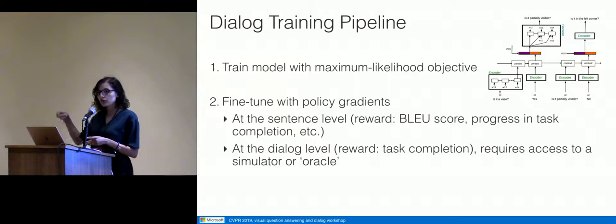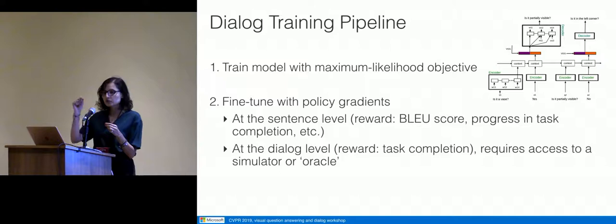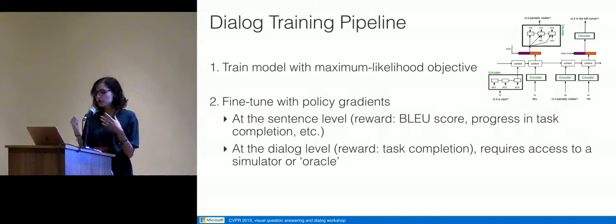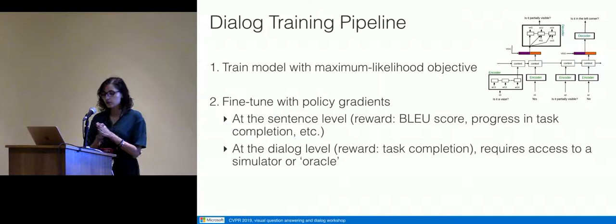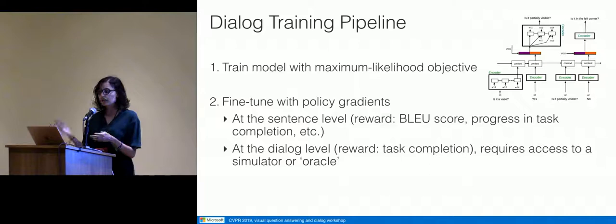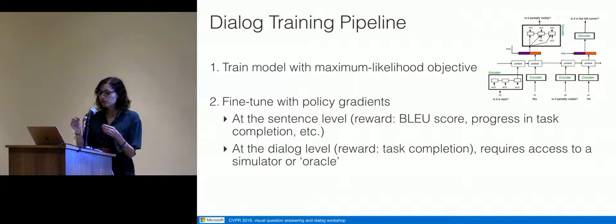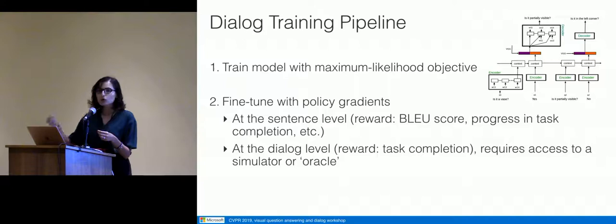You do this with teacher forcing most of the time, meaning your decoder, which decodes the sentence word by word, always gets the ground truth input and just learns to output the next word. This is good, but it induces what we call an exposure bias — a known problem in imitation learning. If you only learn to output sequences one step at a time based on expert sequences, you don't learn from your own mistakes. At inference time, if your model outputs a word that's not the ground truth, it gets into uncharted territory and doesn't know how to recover.